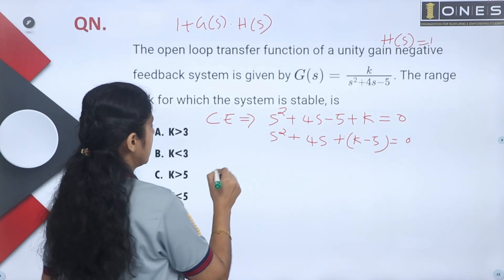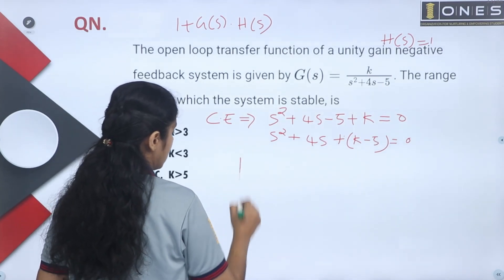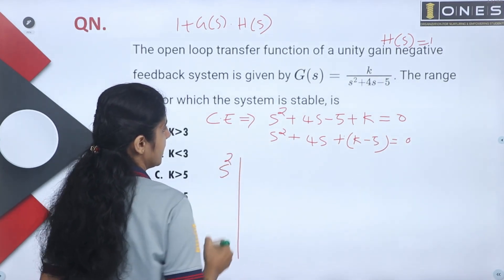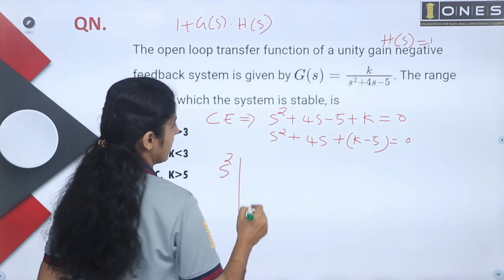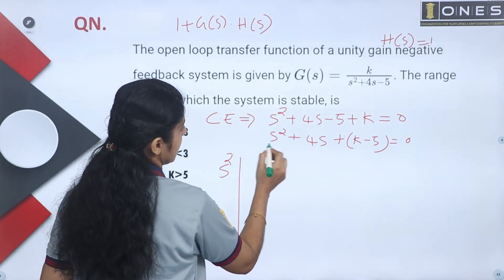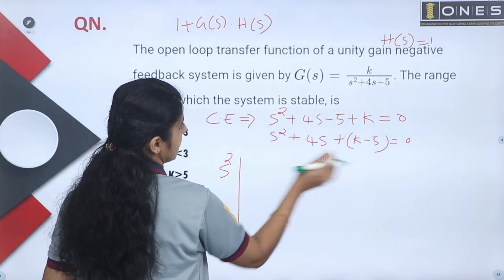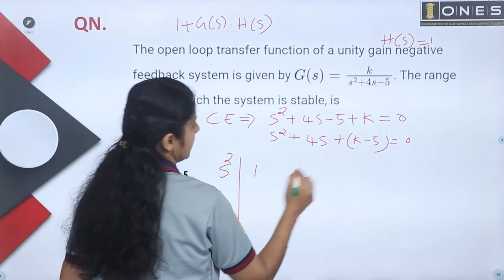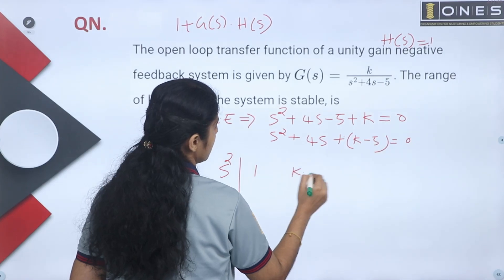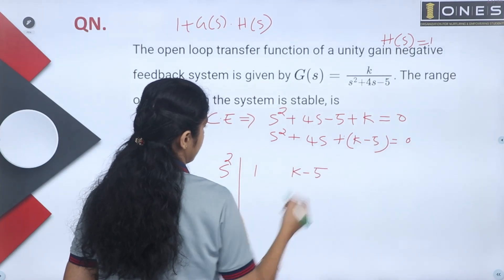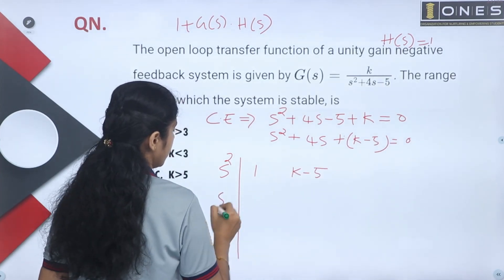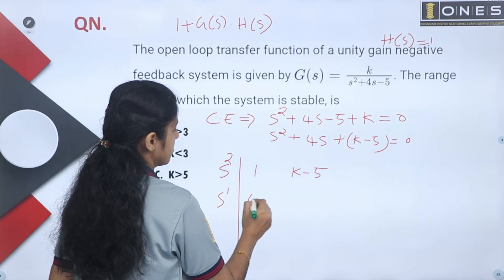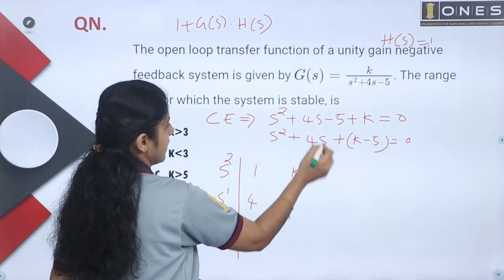Now we build the Routh array. The highest power is s squared. For the s squared row, the coefficient is 1, and for s to the power 0 the term is k minus 5. For the s to the power 1 row, the coefficient is 4.